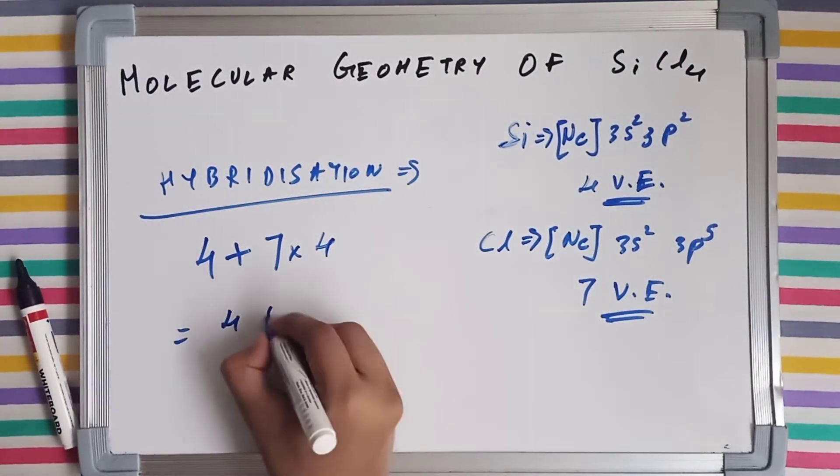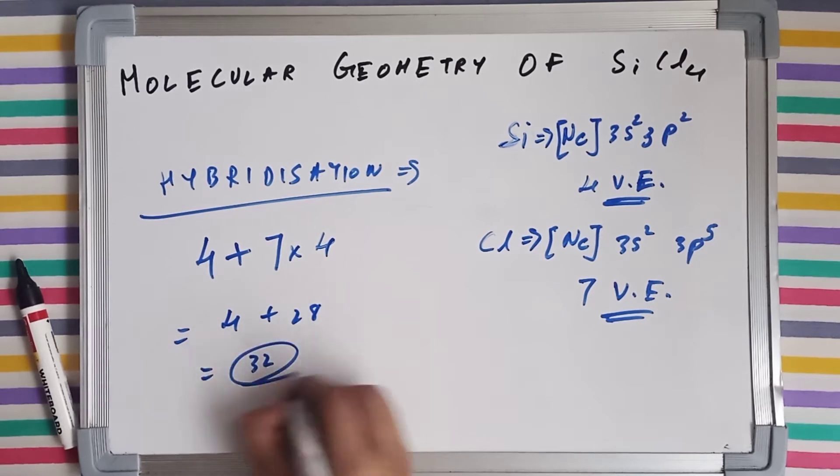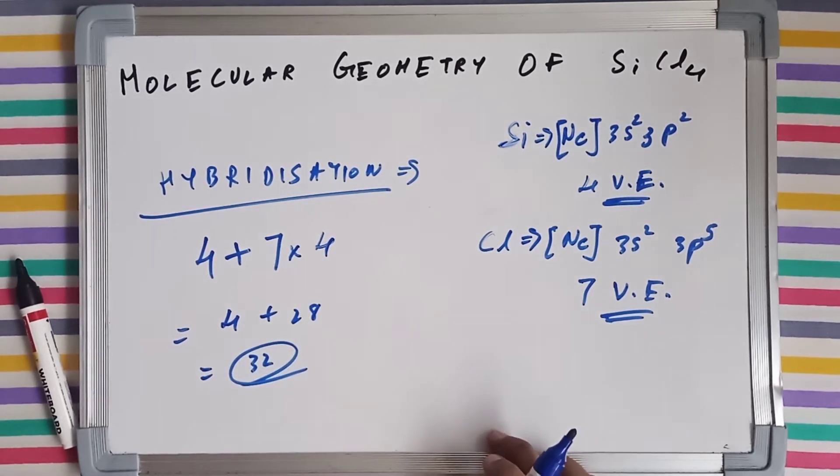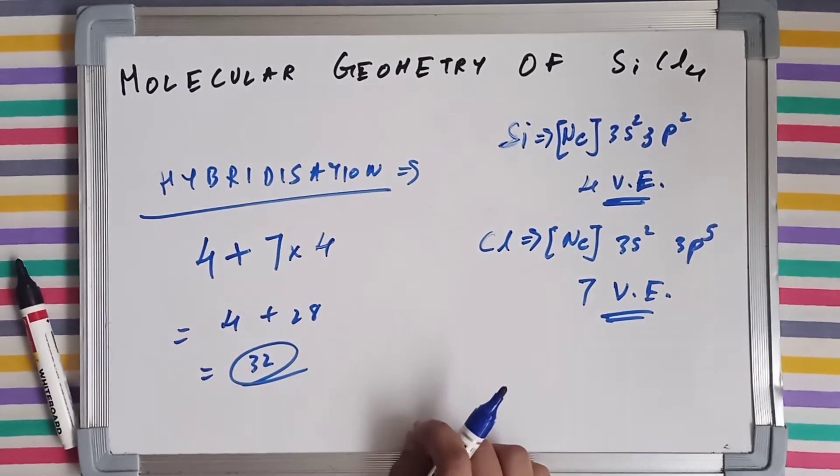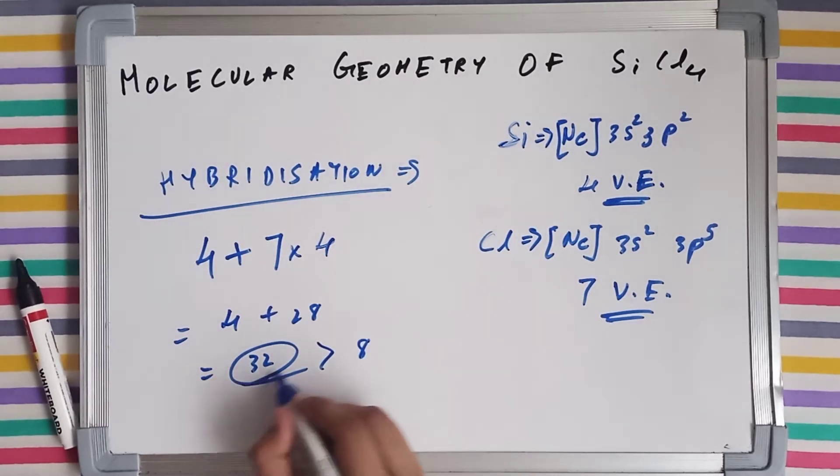So 4 plus 28 gives us 32. Now, as I have told you guys an innumerable number of times in my previous videos, if we get this value greater than 8, then we divide this number by 8.